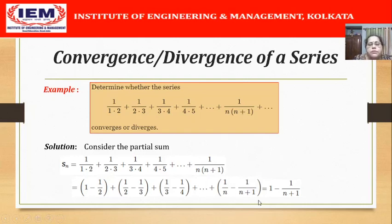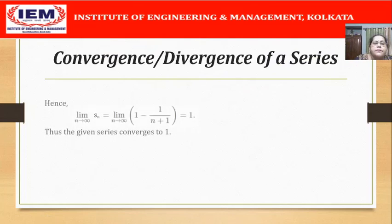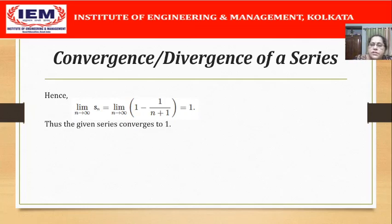If we now add up these terms, we notice that -1/2 and +1/2 cancel, -1/3 and +1/3 cancel, and so on — this is a telescoping sum. The final result is: we are left with the first term 1 and the last term -1/(n+1), so S_n = 1 - 1/(n+1). The next step is to take the limit of S_n as n tends to infinity. Since S_n = 1 - 1/(n+1) and as n tends to infinity this term tends to 0, the limit of the sequence of partial sums is 1. Therefore the sequence of partial sums is convergent, and hence the given series is also convergent and converges to 1. In fact, the sum of the series is 1.